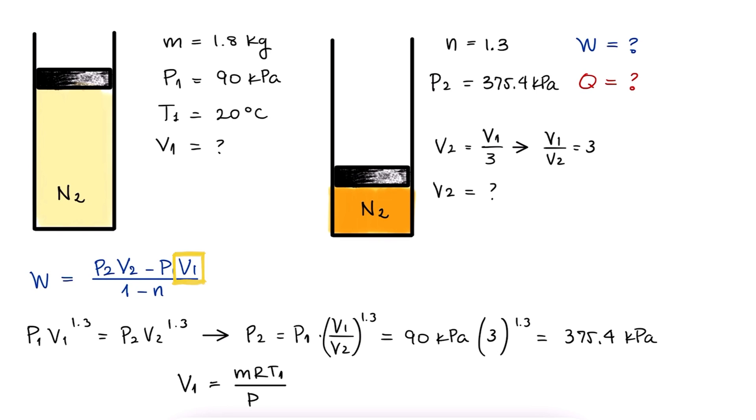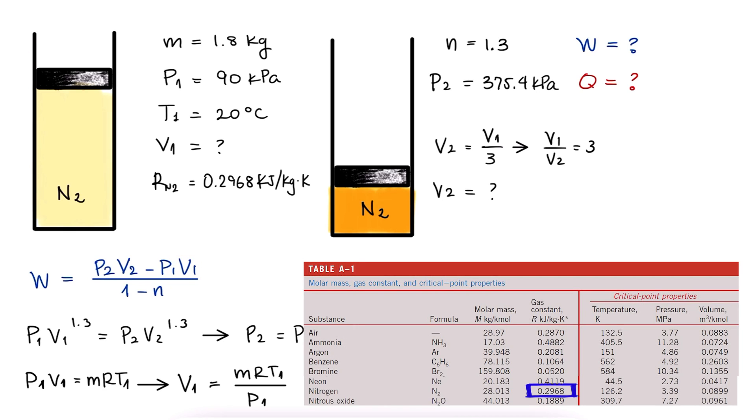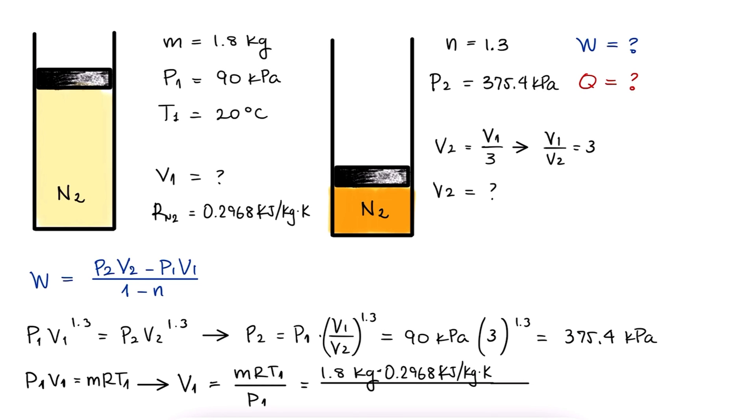V1 can be found using the ideal gas equation. We look up the gas constant for nitrogen and substitute all values to find that V1 is 1.739 cubic meters. And since the volume was reduced to one-third, V2 is equal to one-third of this number.